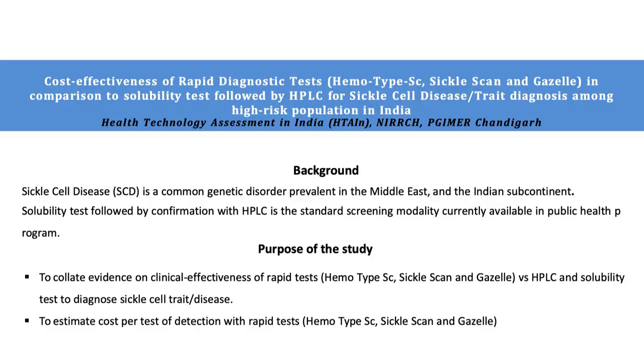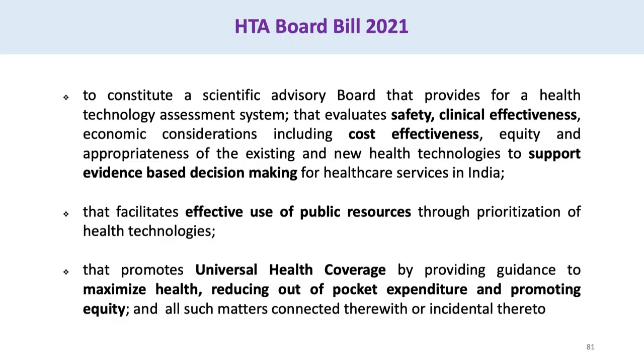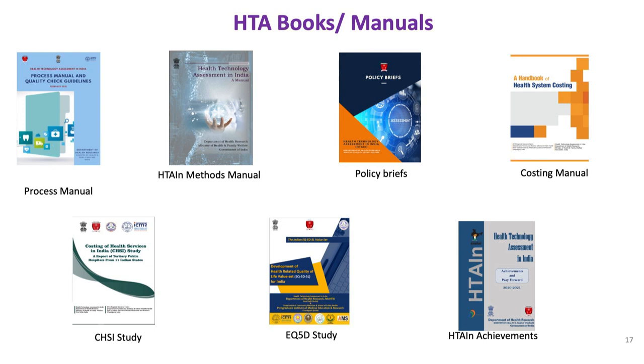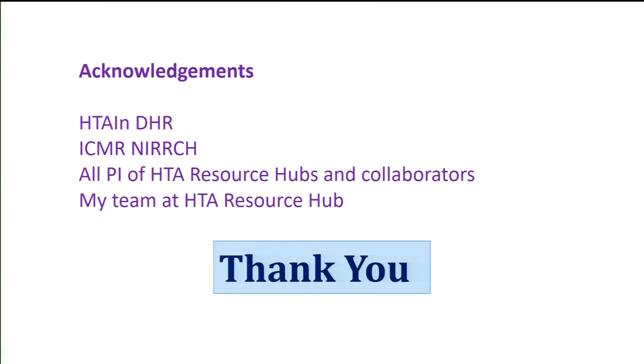Recently, HTA helped government make a decision on the point-of-care test for screening sickle cell anemia. There were various point-of-care tests, all very expensive at about 300 rupees per test. By doing threshold analysis, the team told government that they can negotiate the cost to less than 100 rupees for it to be cost-effective — and they managed to do so and get it into the program. DHR is working hard to get the HTA bill rolling. These are the kinds of contributions HTA is making.